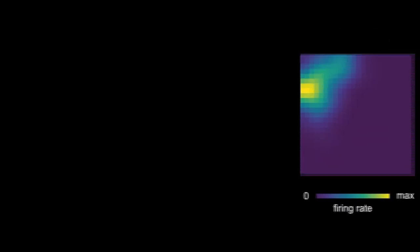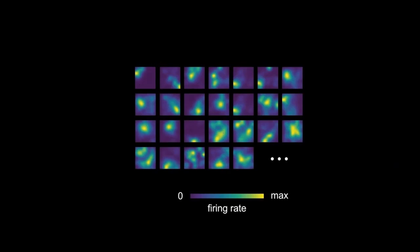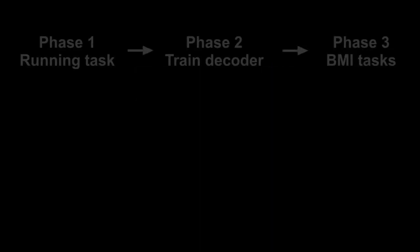Using the place field activity from many hippocampal neurons, we can train a decoder that accurately estimates the animal's current location from ongoing hippocampal neural activity.